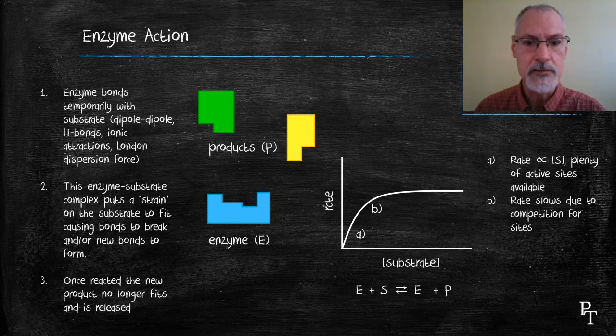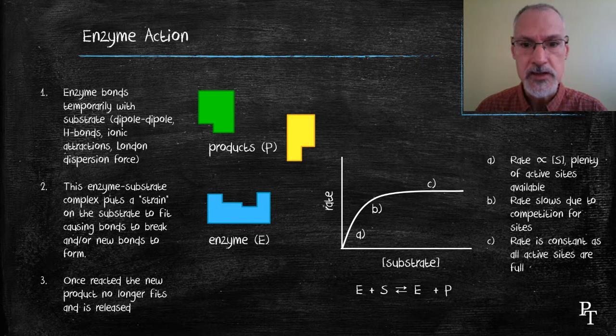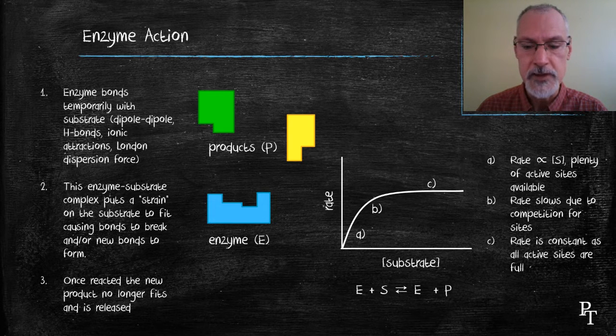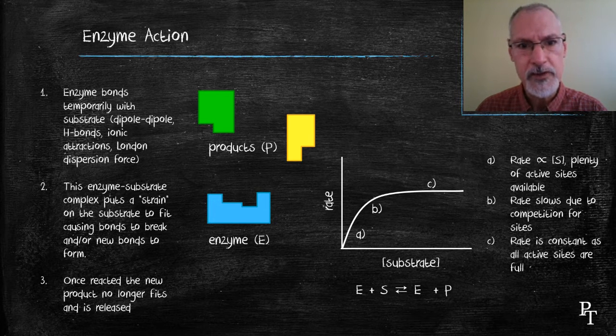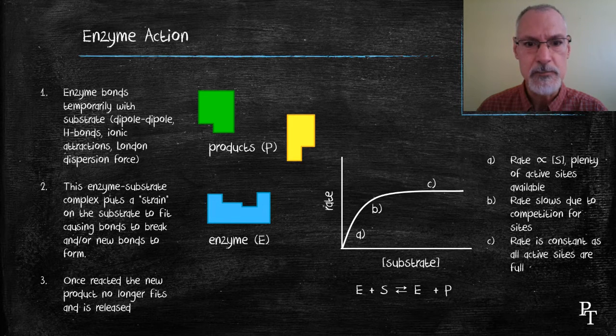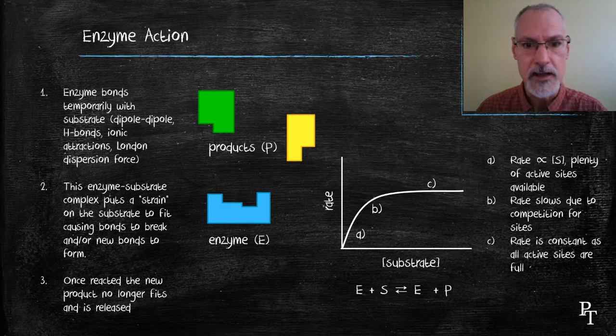Eventually, once all of our sites are filled, further addition of substrate has no effect on the rate of the reaction. This tends to be a classical curve demonstrating how enzymes interact with the substrate.